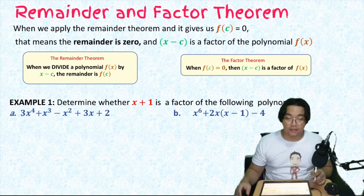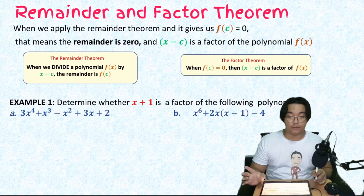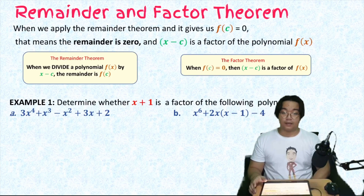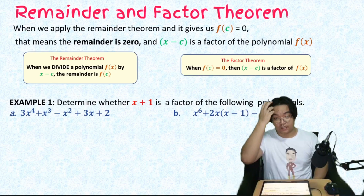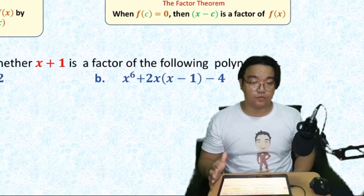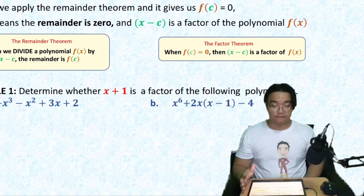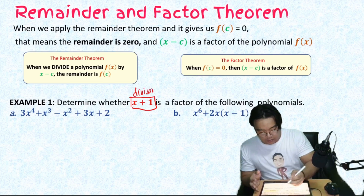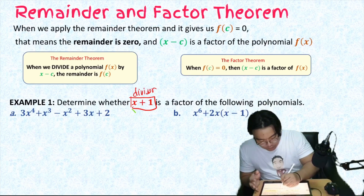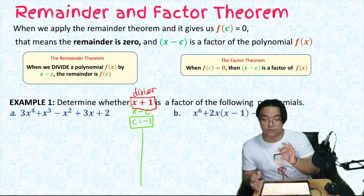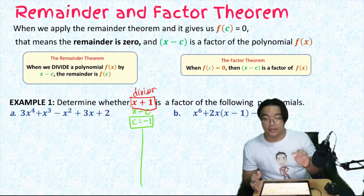Example number one: determine whether (x + 1) is a factor of the following polynomials. You can answer this by performing long division or synthetic division, but it will be a long process. Now that we know the remainder and factor theorems, by simply substituting the c value of the divisor we can get the remainder. Our divisor is (x + 1), so c is equal to negative one.